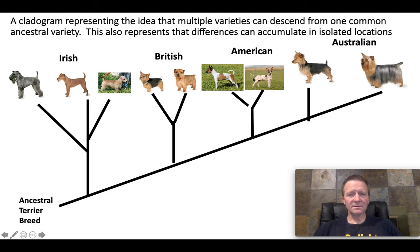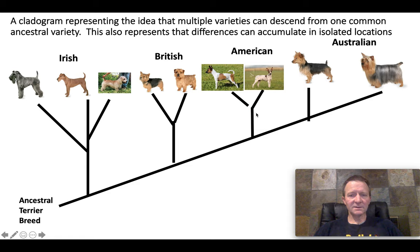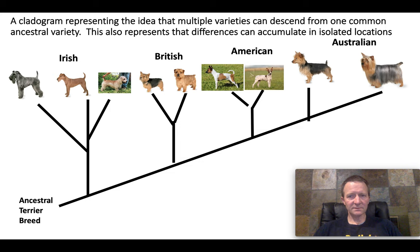The hairless terrier is interesting because we know exactly when it appeared — there was a batch born in the United States in 1972, which was a mutational occurrence that introduced the first hairless terriers. So going back to around 1971, there was not two varieties, there was only one, and these two have descended from that one. If we keep going back in time, eventually all of these varieties can be traced back to one ancestral terrier variety.